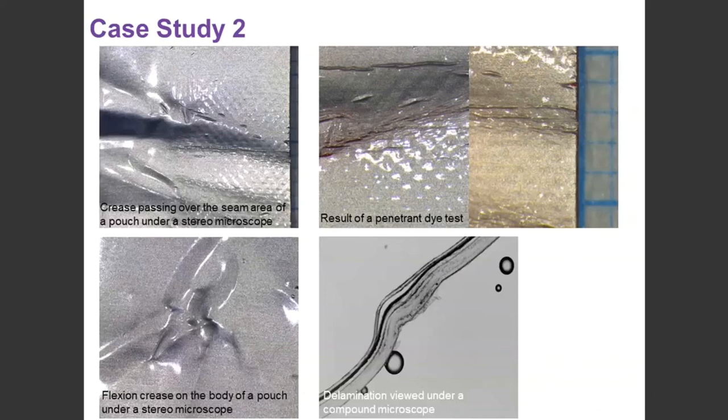The second case study is our laminates. This is an aluminum retort pouch. And, again, even with a flexion crease, we can do cross-site working. This bottom image here shows our flexion crease under a stereo microscope. And this top image shows that that flexion crease actually passes over the seals in this case.